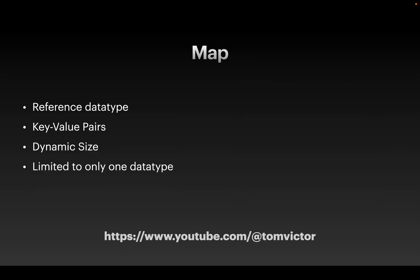We already learned a little bit about data types and slice. Slice is an extension of arrays, and similarly maps is also related to arrays. Maps is basically a JSON-like data structure — that's why we learn it. It is an internal data type whose size can increase and decrease. Maps use key-value pairs — a key and a value — as a collection.